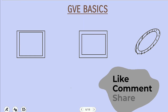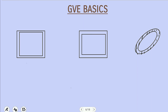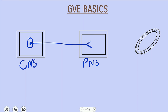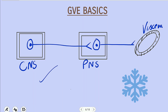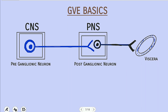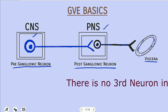Now the neuronal composition of the general visceral efferent component. This component consists of two neurons. The first neuron is present in the central nervous system. From here this neuron will move out and reach the peripheral nervous system, where it will synapse with the second neuron. The second neuron will reach the destination — the viscera — which can be cardiac muscle, smooth muscle, or a gland. This is the key diagram to understand the general visceral efferent component. We have two neurons: the first is the pre-ganglionic neuron in the central nervous system, and the second is the post-ganglionic neuron in the peripheral nervous system. There is no third neuron — it consists of only two neurons.